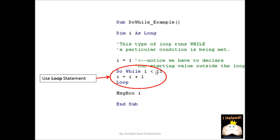If you notice, we have a condition up here. The idea is that i, which is currently set to 1, will keep having 1 added to it while it's less than 11. So it's going to go 1, 2, 3, 4, 5, 6, 7, 8, 9, 10, and it's going to keep looping, but the minute it hits 11, it's going to exit that loop, and then we're going to have a message box that displays i. We'll have an example of this later.